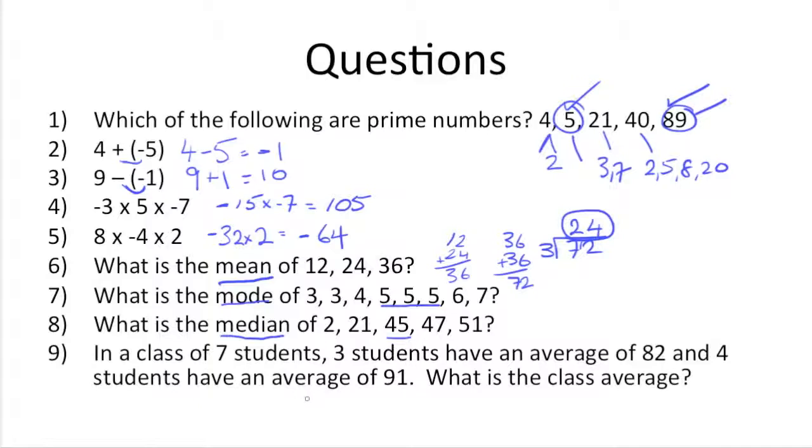Now on to number nine. In a class of seven students, three students have an average of eighty-two, and four students have an average of ninety-one. What's the class average? So what we need to do is take the three students at eighty-two and multiply those out, so we get three times eighty-two, which is equal to two-forty-six. And then do the same with the other group of students, the four at ninety-one. So four times ninety-one is three-sixty-four.